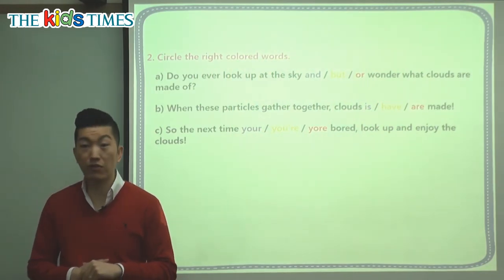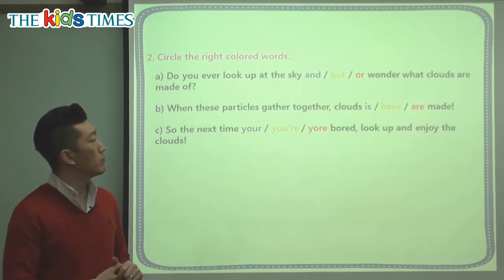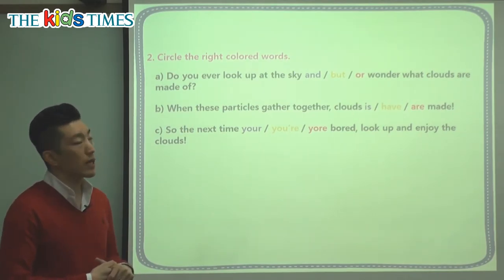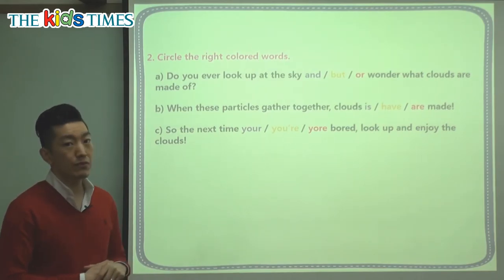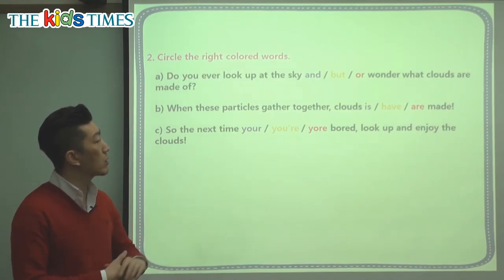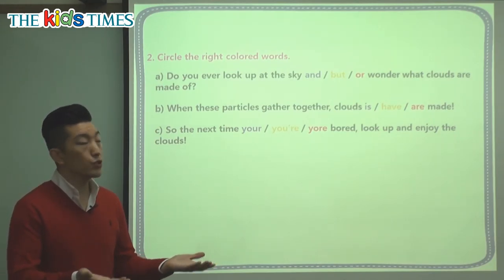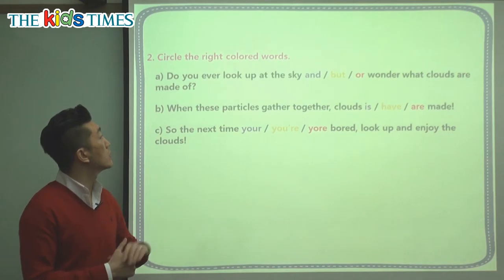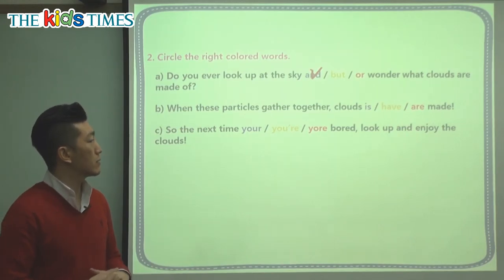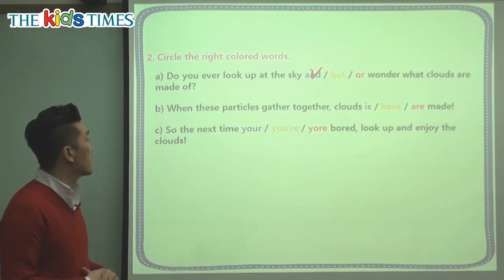Let's choose the right words. Do you ever look up at the sky and — but — or — wonder what clouds are made of? There are two ideas connected here, so we need a conjunction. But means opposite, or means you have two choices, and and means both. Since we both look up and wonder, the correct choice is and: do you ever look up at the sky and wonder what clouds are made of?